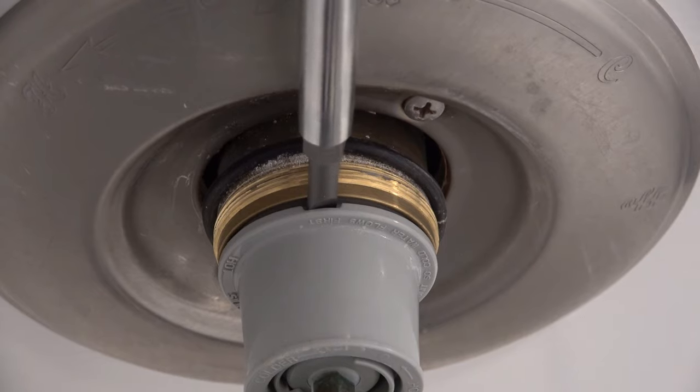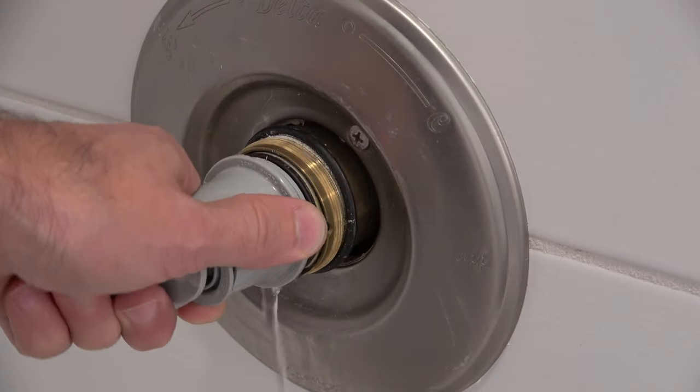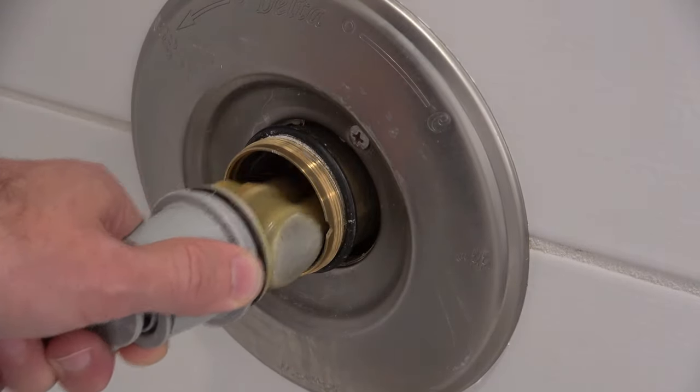Use a screwdriver to loosen the cartridge, then pull it all the way out. You'll notice that some of the remaining water will drain and drip out.